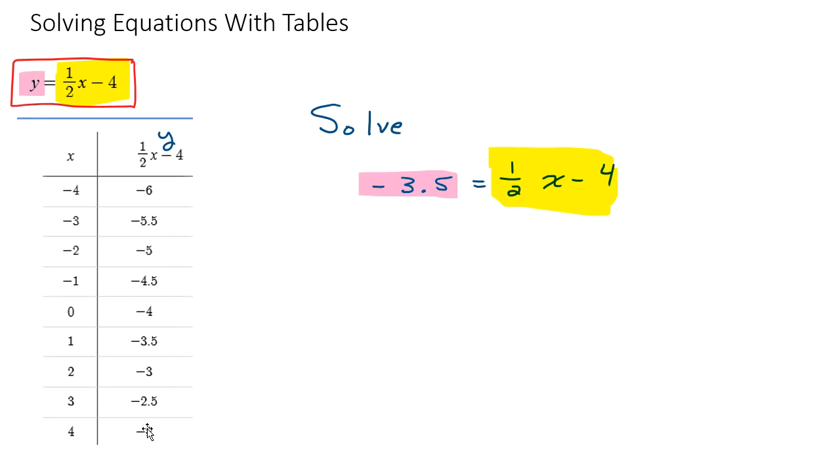And so we want to use our table and we want to try to find where does y equal negative 3.5. So we just look down the table. Oh, there it is, negative 3.5. Well, what x value is causing the y value to be negative 3.5? It is one. So x equals one